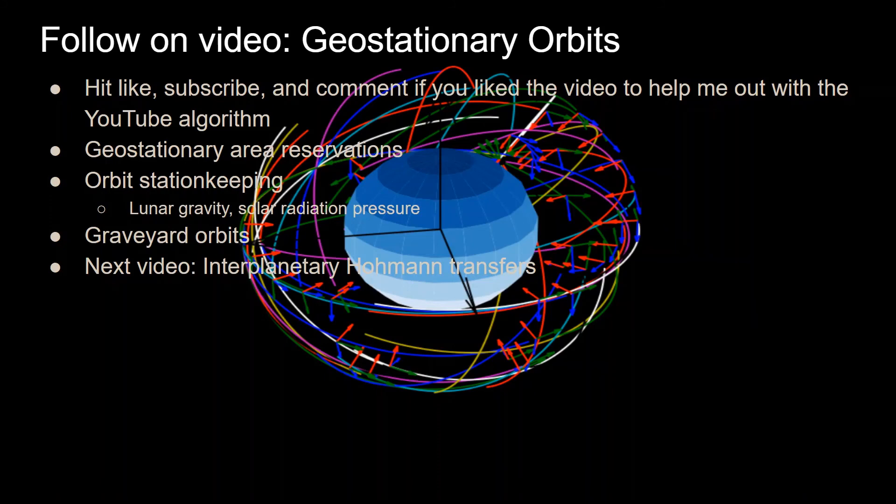That's pretty much it for this video. Be sure to hit like and subscribe if you liked the video, and leave me a comment to let me know what you thought to help me out with the YouTube algorithm. For a follow-on video of this, I'll get into a specific case of geostationary orbits, where I can go over the geostationary area reservations, so you have a certain amount of angle and argument of periapsis that you can use, so you don't get too close to any other satellites in geostationary orbits.